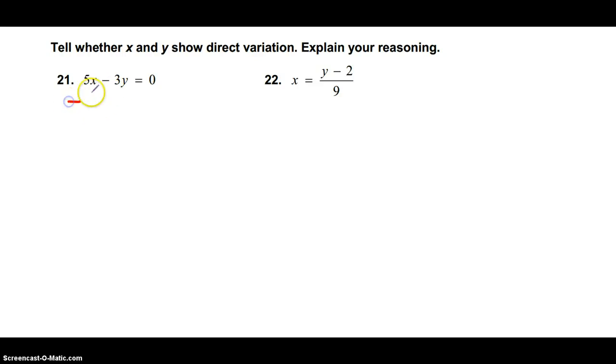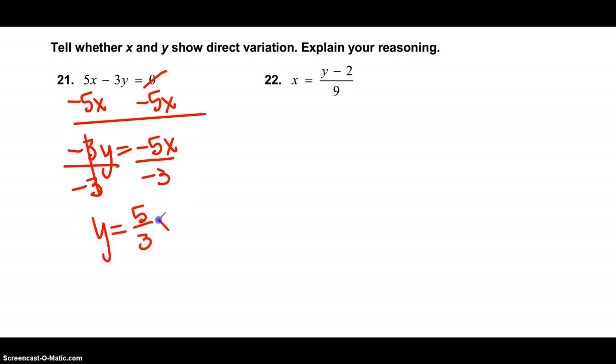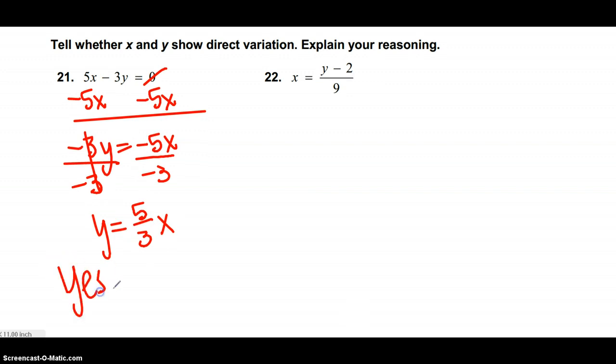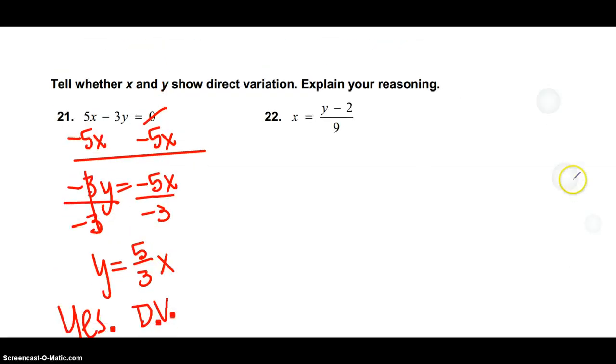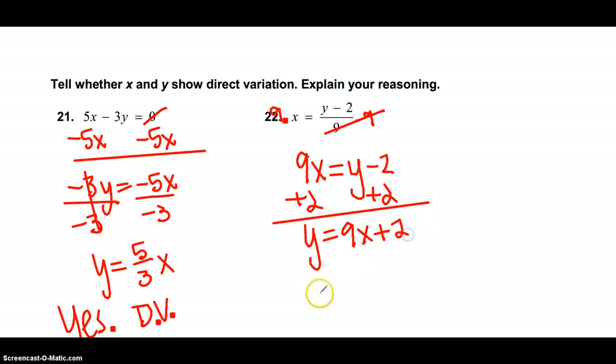21, this one's a little tricky. I need to get y by itself, so subtract 5x, subtract 5x. I have negative 3y equals negative 5x, divide by negative 3, divide by negative 3 to get y by itself, and I have y equals negative divided by negative is a positive, so y equals 5 thirds x. Now this shows direct variation because this is k times x. This one, 22, is probably the trickiest problem on the whole test. The first thing you have to do is multiply by 9 both sides to get 9 out of there. So then I have 9x is equal to y minus 2. Once you have that it should be pretty easy, get y by itself, to add 2 to both sides, y is equal to 9x plus 2. And this is no direct variation because there has that plus 2 on the end. If it was just 9x it would be good, but the plus 2 makes it not show direct variation.